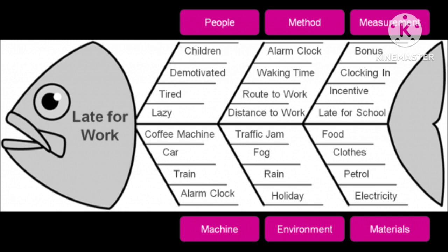Number two — Method: the method by which the employee comes to office, waking time and alarm clock malfunctioning, and the route or distance from home to work.